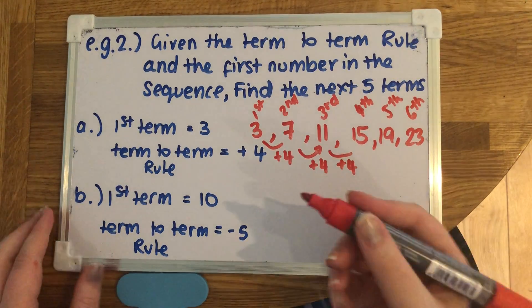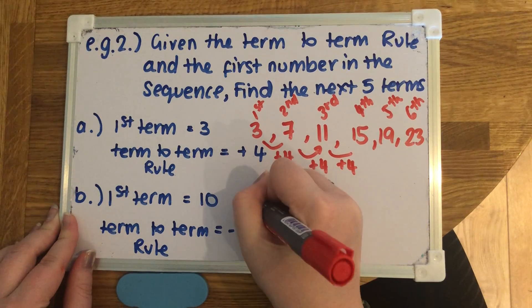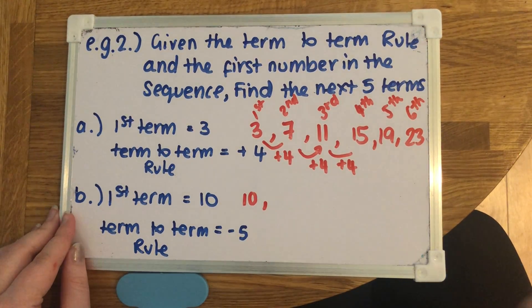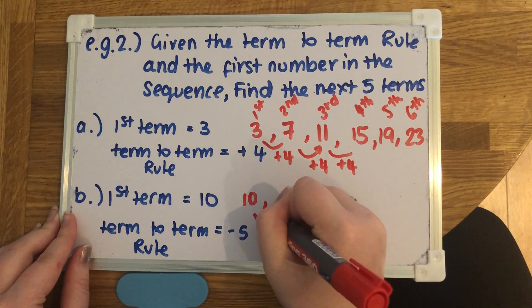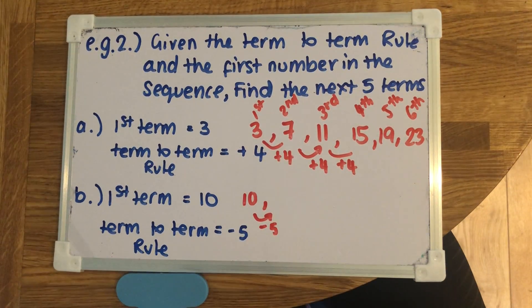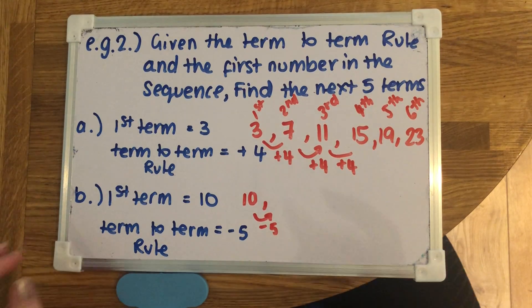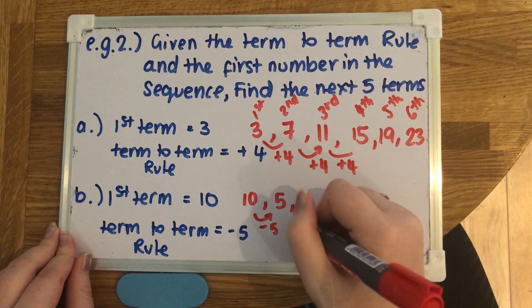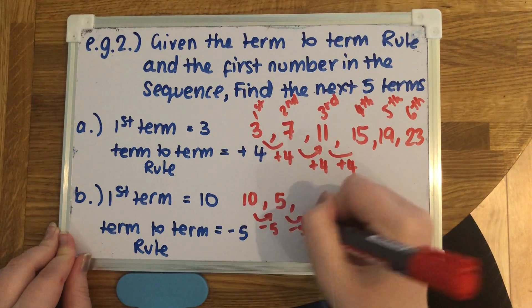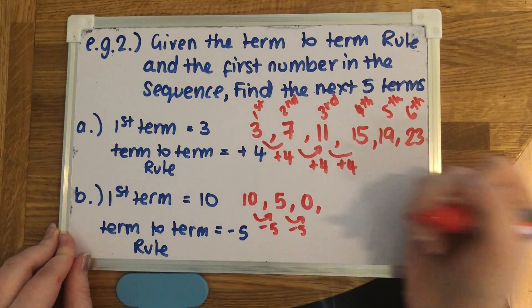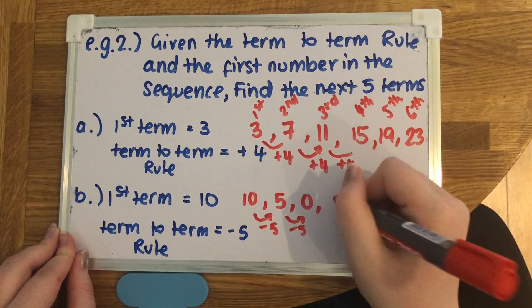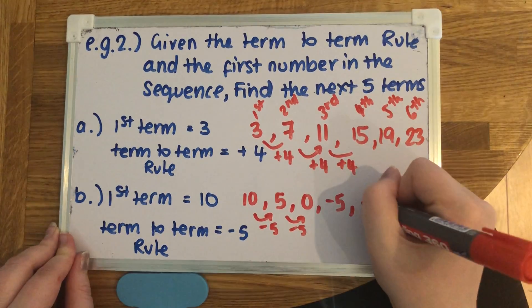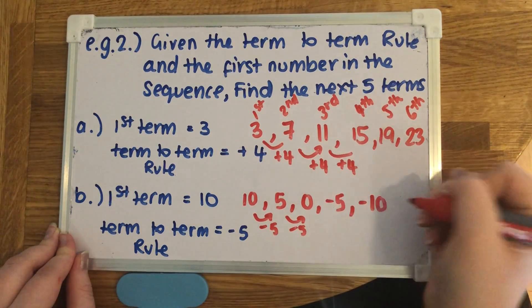For part b, again, we're starting with 10, and we're taking five away from it. So if we take five away from 10, we're going to get 5, so that's the second one. Again, taking away another 5 would give us zero, and we do it again, negative 5, and again, be careful with your negatives, negative 10.